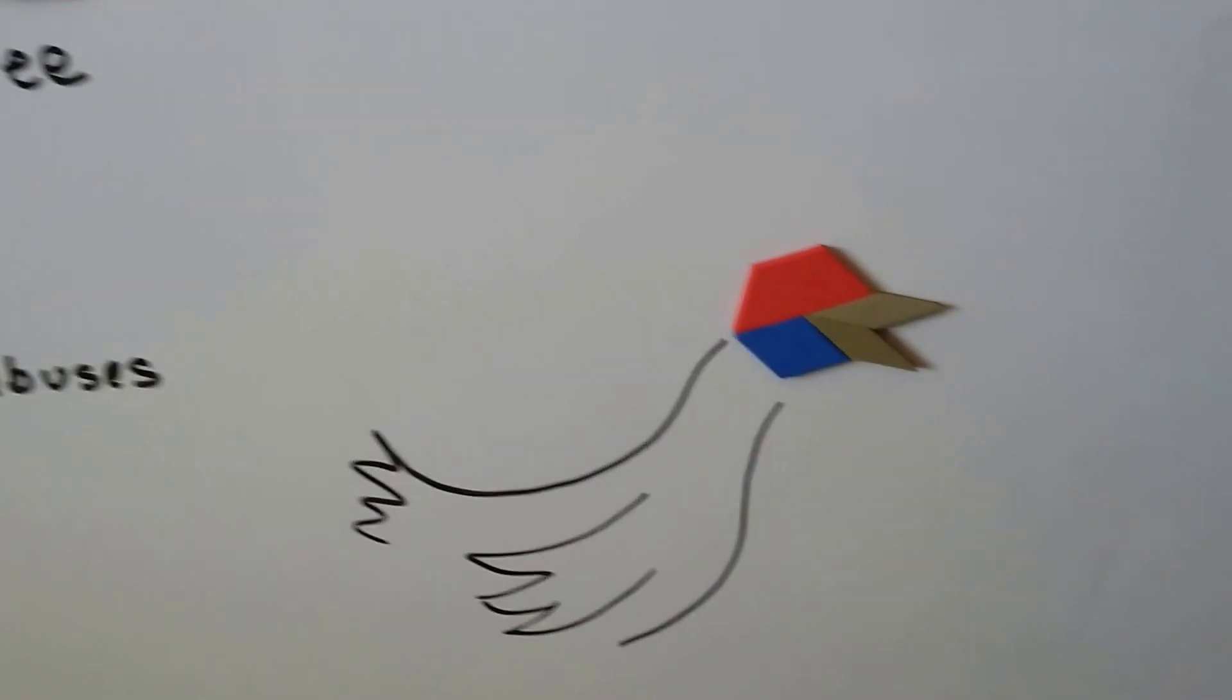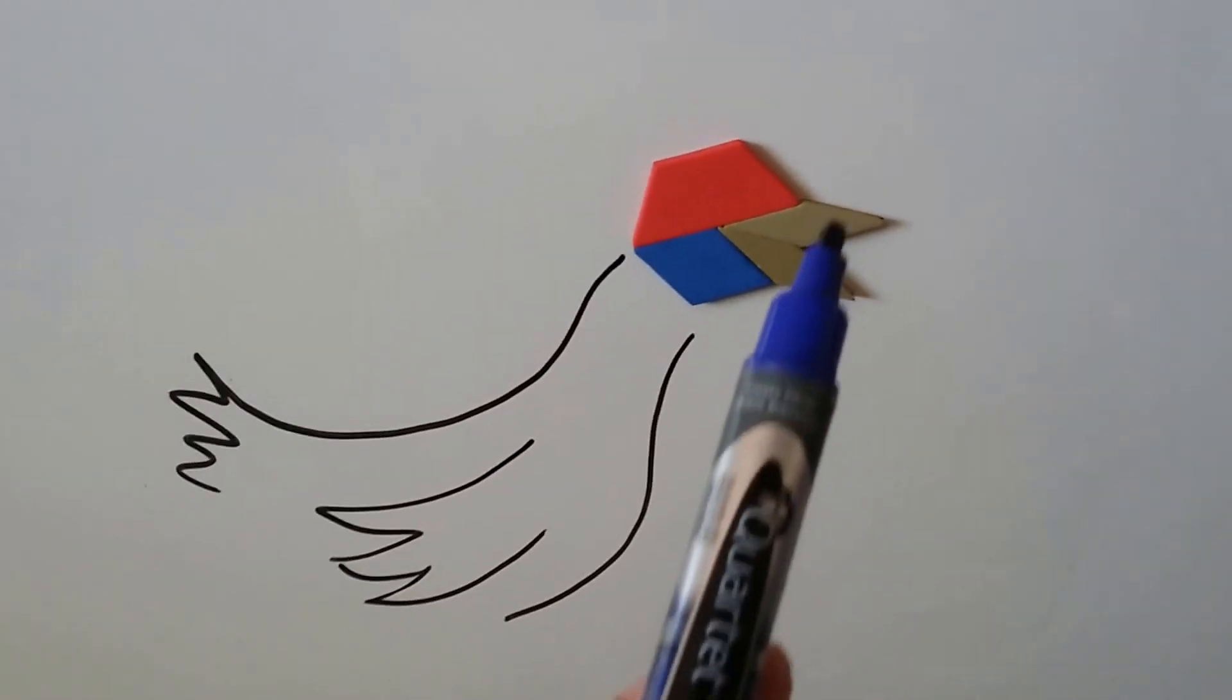And look here. I made the head of a bird, and you can see that the rhombuses make the beak.